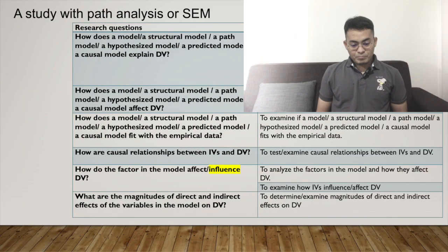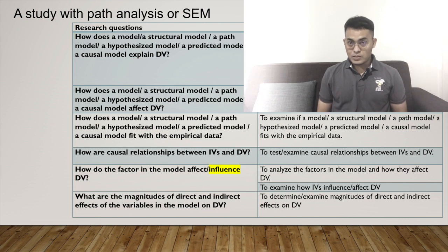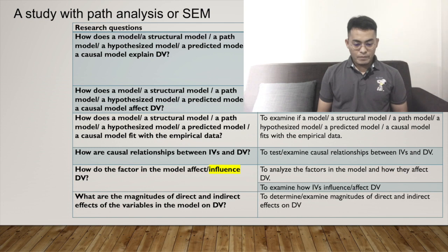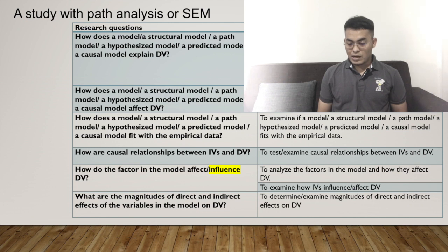The third question: how does a model — a structure model or causal model — fit with the empirical data? And the objective is: to examine if the model fits with the empirical data. The fourth question: how are the causal relationships between independent variables and dependent variables? And the objective is: to test or to examine causal relationships between independent variables and dependent variables.